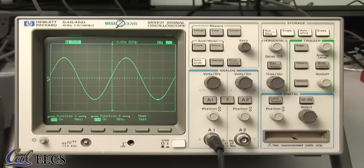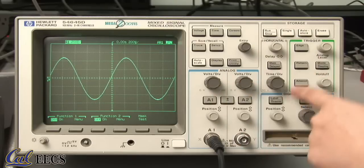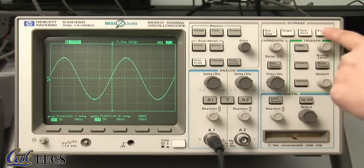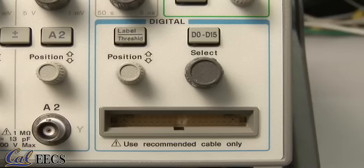Now that we have an idea of how to display a waveform, let us explore scope functionality in more detail. The different features on the scope are analog, horizontal, trigger, storage, and digital. We will not be using the digital buttons in this video.